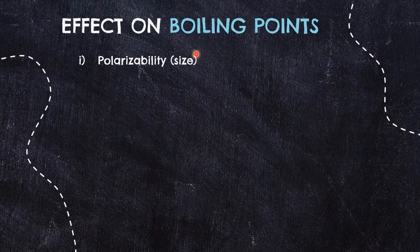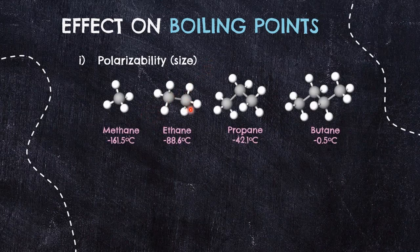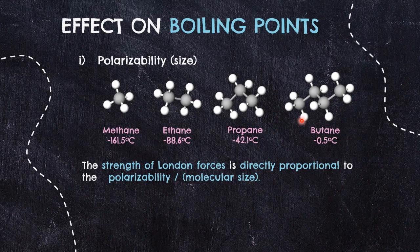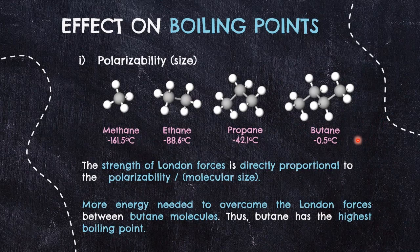Let's look at how the strength of London forces affects boiling points using the two factors. In terms of polarizability, given non-polar molecules of methane, ethane, propane, and butane — all straight chain with only carbons and hydrogens — methane with only one carbon has a boiling point of −161.5°C, the lowest, compared to butane with −0.5°C, the highest. Butane has the biggest molecular mass from its four carbons, meaning bigger size gives higher polarizability, resulting in stronger London forces, which requires more energy to overcome.